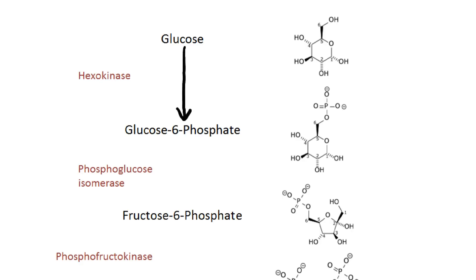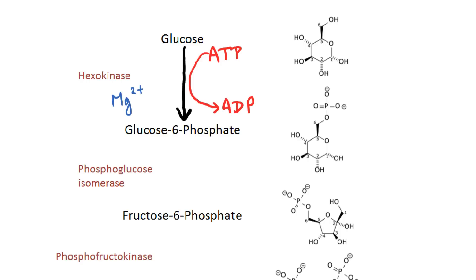The first step of glycolysis is going from glucose to glucose 6-phosphate. In this reaction, ATP is converted to ADP and this reaction is facilitated by an enzyme called hexokinase. Magnesium is a cofactor in this reaction. Here you can see that the phosphate group has been added onto the 6th carbon.